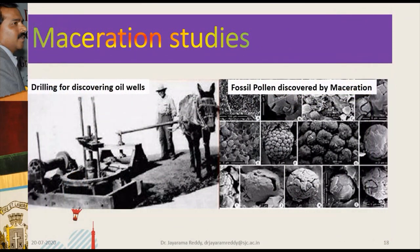Here, people who are trying to discover oil wells are drilling the earth. This is the age-old method — they drill the earth, collect the rock samples, and go for maceration. The maceration result will give us the index fossils. If a particular type of fossil is present, then we can estimate and conclude that there is a petroleum well in that region. This is called the maceration technique.